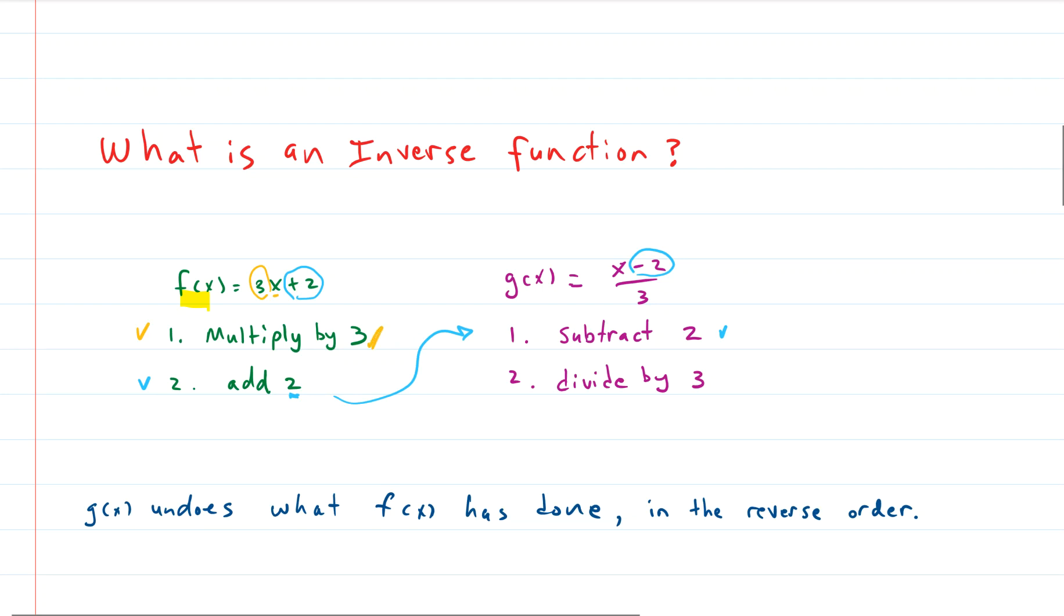And then after that, what's the next step? So the last step on our original function was adding 2. The step just before that was multiplying by 3. So how do you undo multiplying by 3? Well, you do the opposite, you divide by 3. So that's what we do, we divide by 3. That's what happens in our inverse function. So as a review and a summary, g, if g is the function inverse of f, then it undoes what f has done in the reverse order.